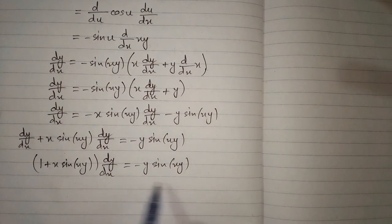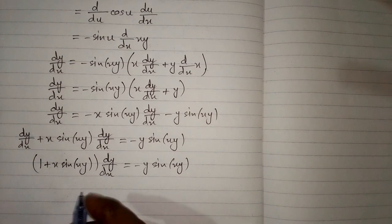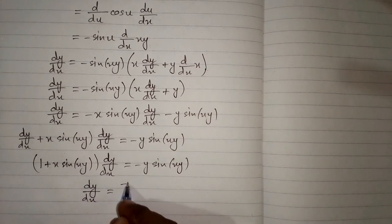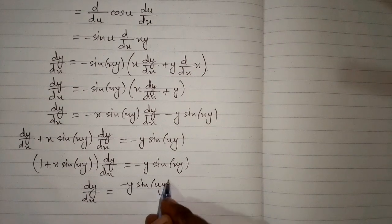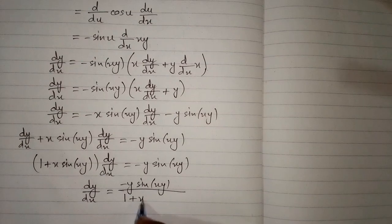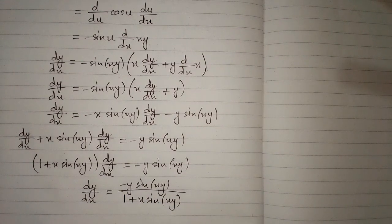Now we take the bracket to the other side. Since it is multiplied by dy/dx, when we move it to the other side it will divide. So we have dy/dx = minus y·sine(xy) divided by (1 + x·sine(xy)), and this is the required answer.